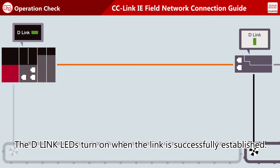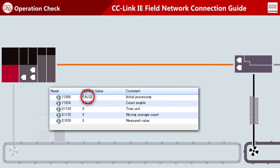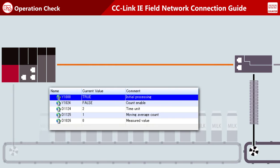Turn on the devices and check the operation. Turn on the initial processing device at the master station. Then set values for the time unit and moving average count devices. Turn on the count enable device.